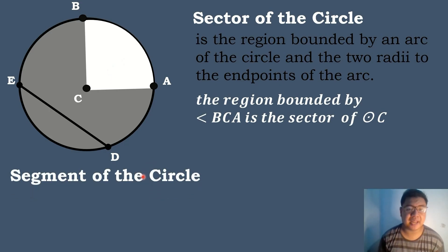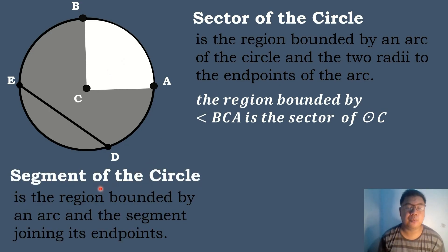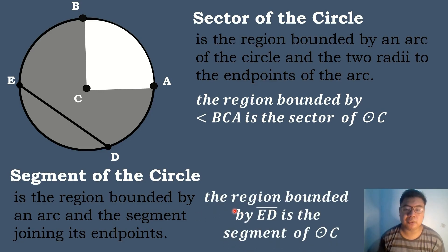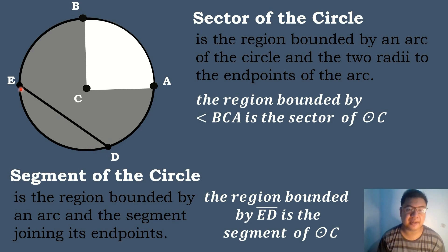We also have the segment of a circle. When we say segment of the circle, it is a region bounded by an arc and the segment joining its endpoints. In this given figure, the region bounded by segment ED is the segment of circle C. We have arc ED, and the region bounded by it is called the segment of the circle. This portion is the segment of circle C.